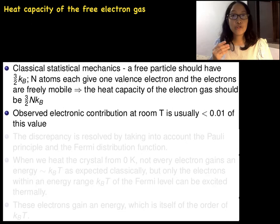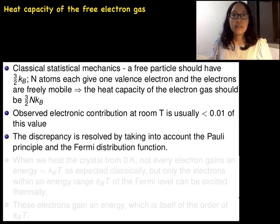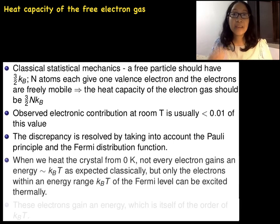There's a solution to this discrepancy. That's Pauli exclusion principle and also Fermi-Dirac distribution function. When we heat up a specimen from absolute zero to some temperature, not every electron gains approximately kBT energy as expected classically. But only those electrons in orbitals within an energy range kBT of the Fermi level.